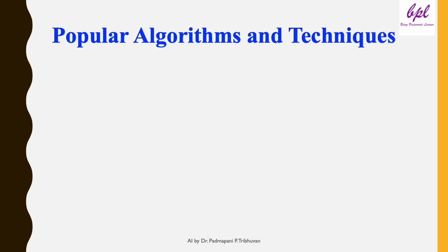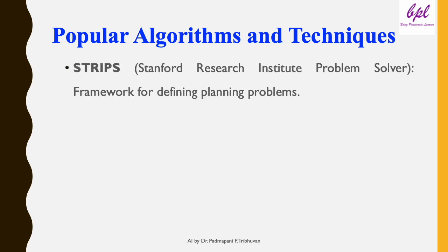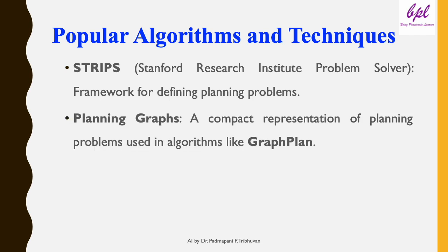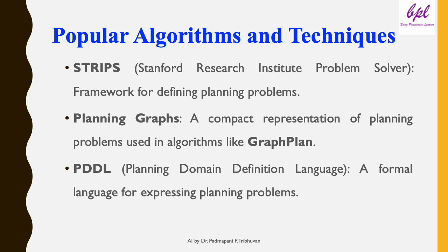Some of the most widely used techniques in AI planning include STRIPS, planning graphs, and PDDL. STRIPS (Stanford Research Institute Problem Solver) is a framework for defining planning problems. Planning graphs are a compact representation of planning problems used in algorithms like GraphPlan. PDDL (Planning Domain Definition Language) is a formal language for expressing planning problems.